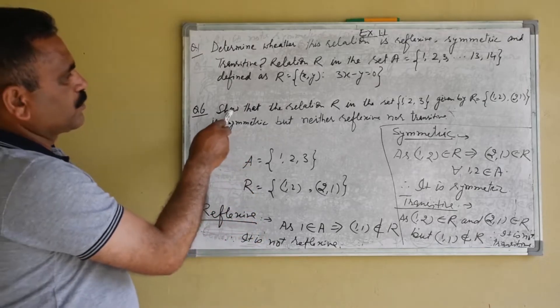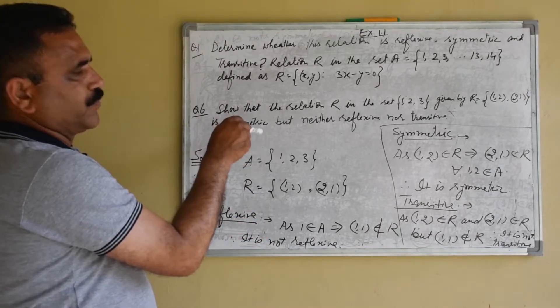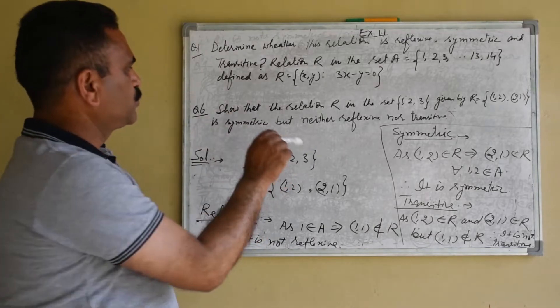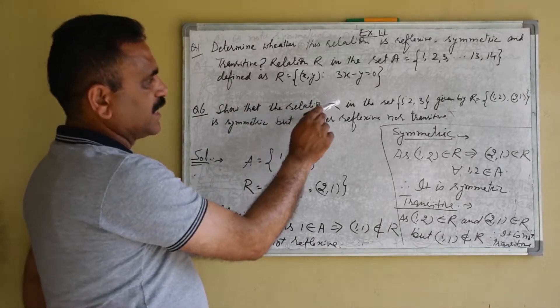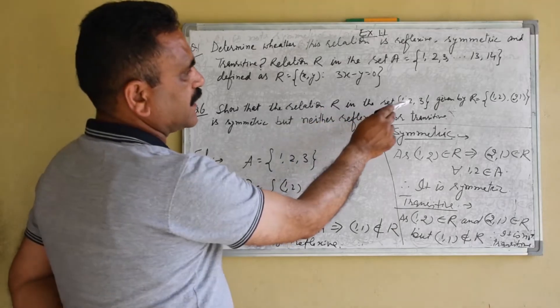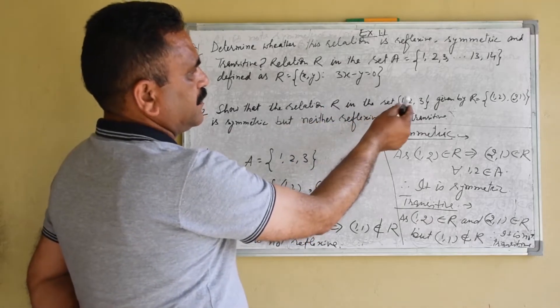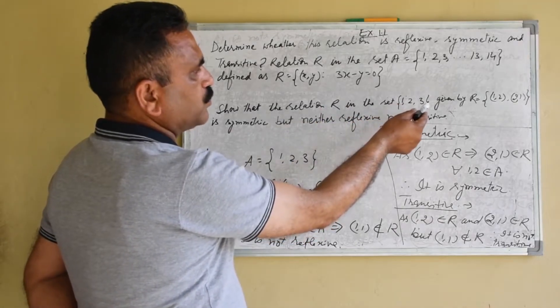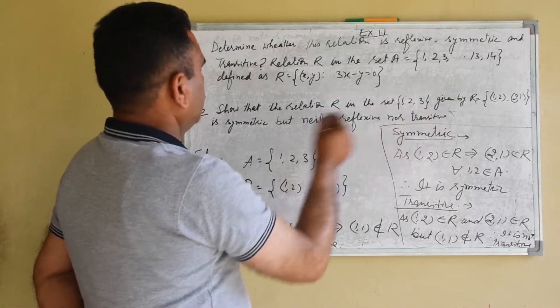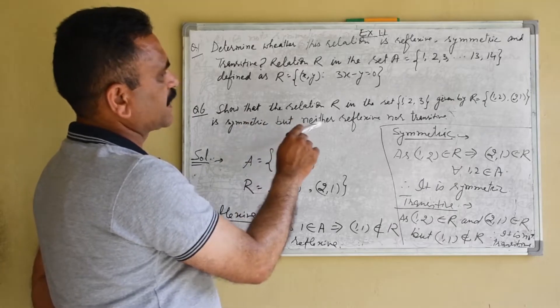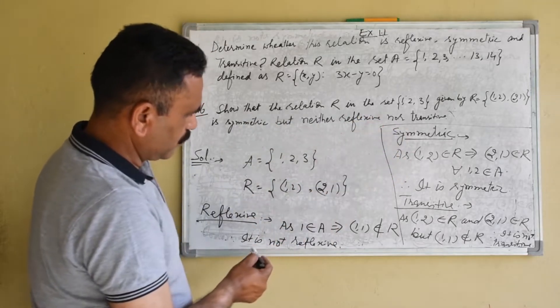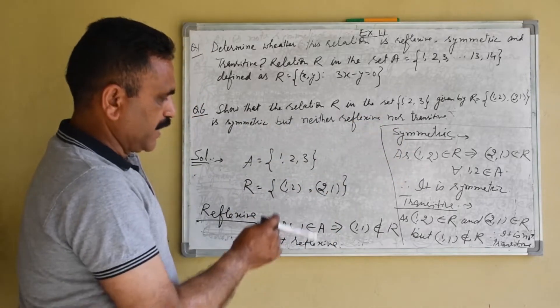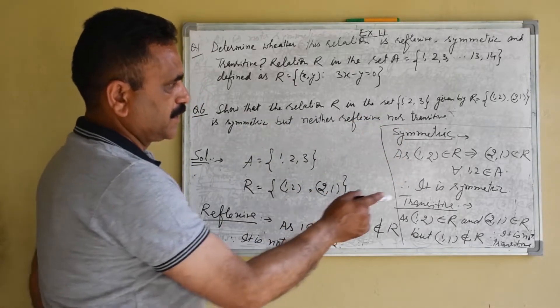So what was the question? We were required to show that this relation R in set {1, 2, 3} is symmetric but neither reflexive nor transitive. And we have shown that this relation is symmetric but it is neither reflexive nor transitive.